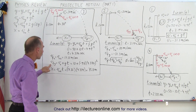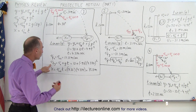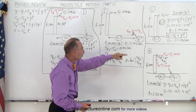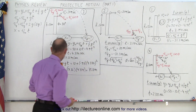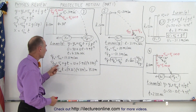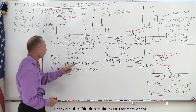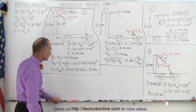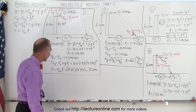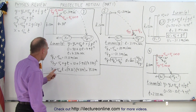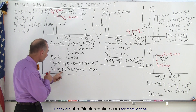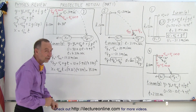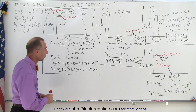To find the final velocity in the y direction we use the same equation as before, but now with a positive initial y-velocity minus g times t, where we substitute the time found earlier. For horizontal distance, we simply multiply the initial x-velocity by the time in the air to get how far the projectile traveled.